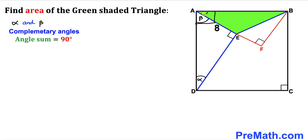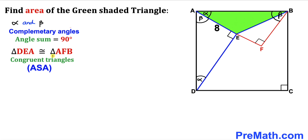Now focusing on triangle AFB: we know one angle is 90 degrees and another is alpha, so the third angle must be beta. Therefore, triangle DEA and triangle AFB are congruent by the Angle-Side-Angle congruency theorem.